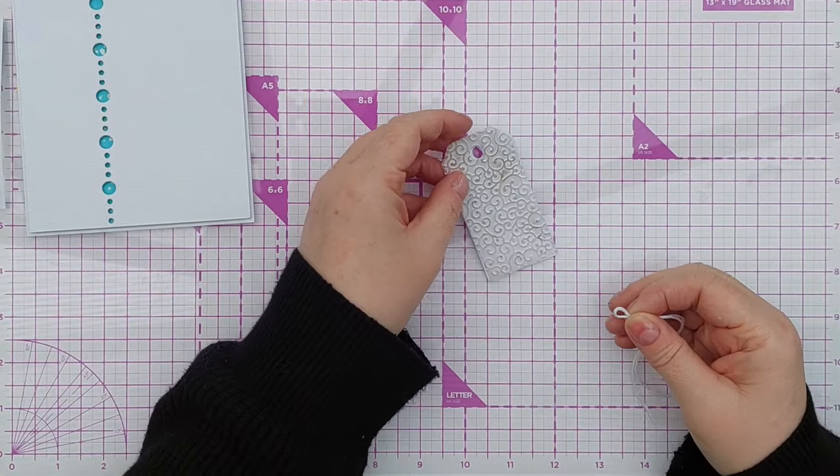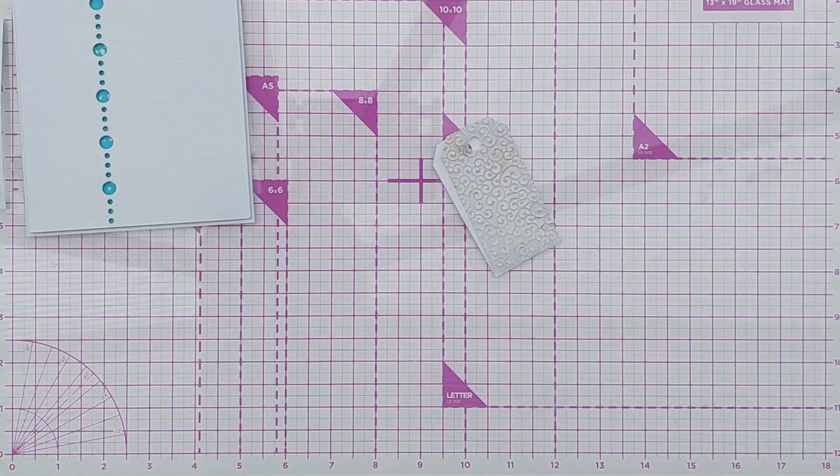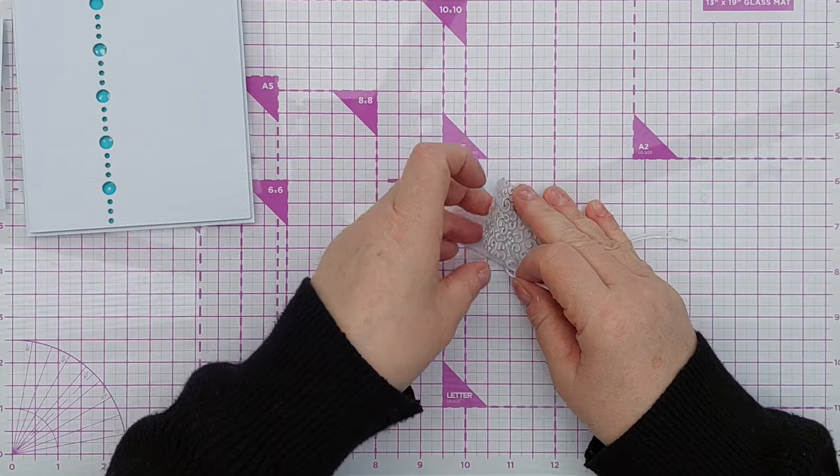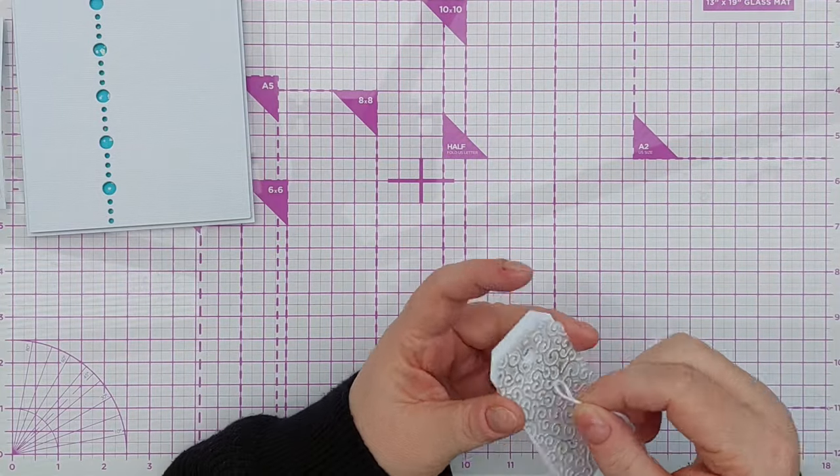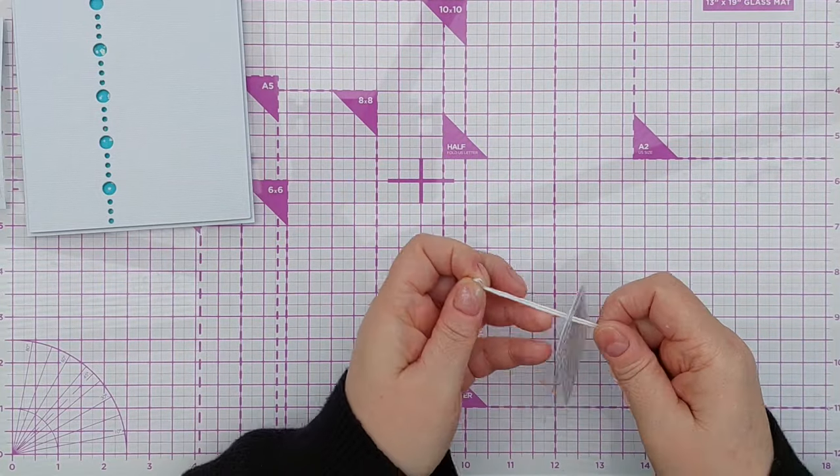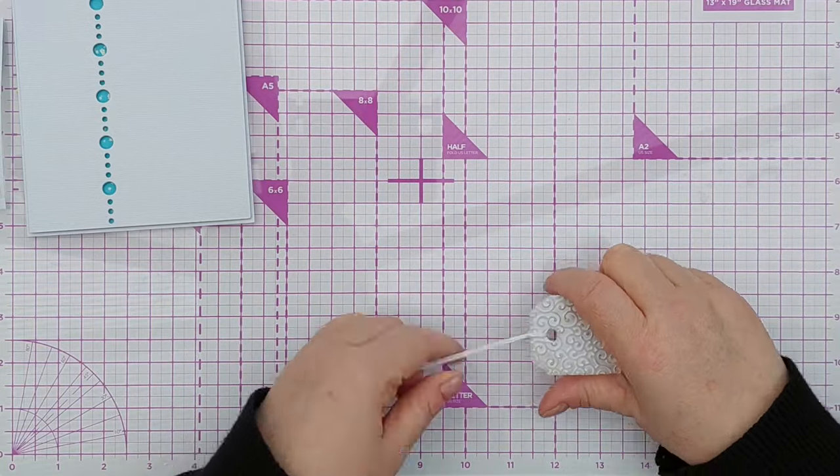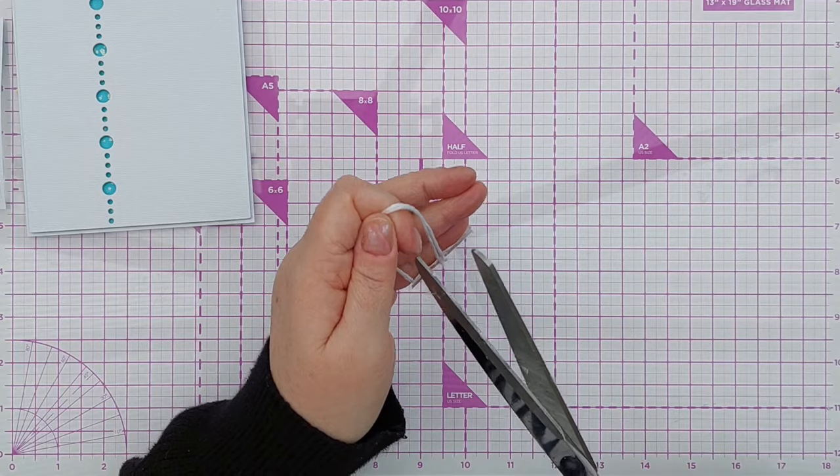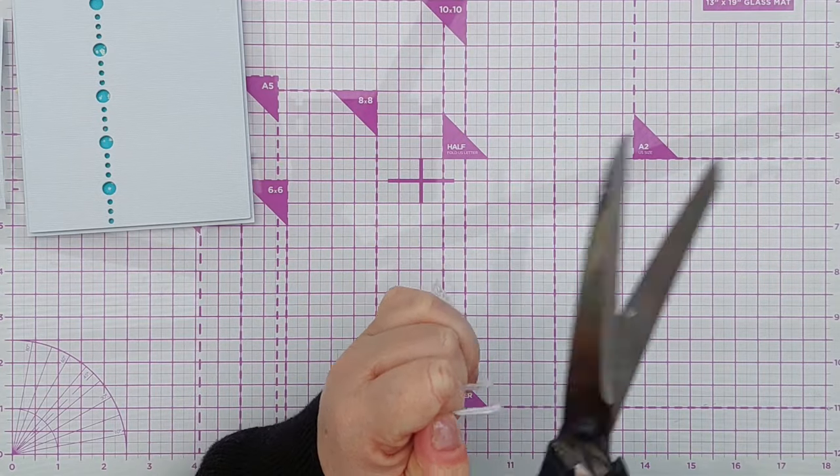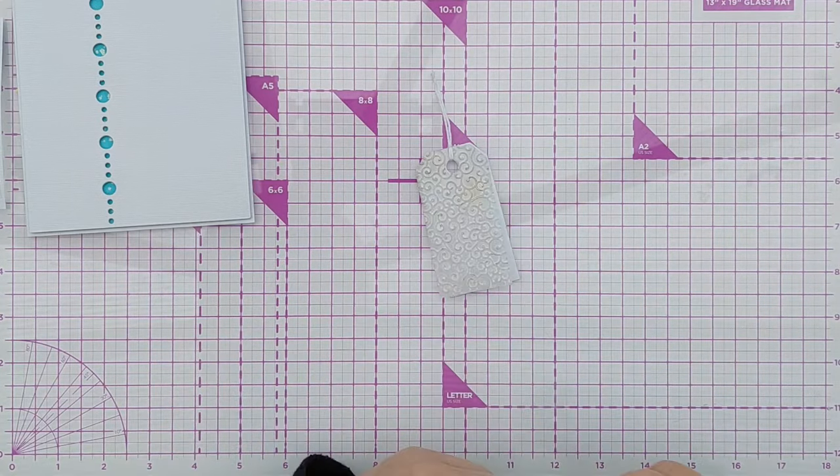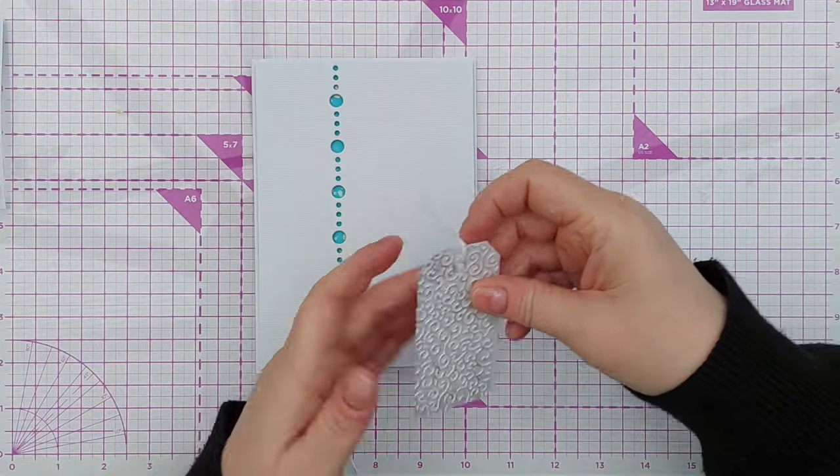After that I decided to attach the white and the vellum tag together using a bit of embroidery thread just white embroidery thread. But when I placed this on my card it covered up too many of the blue holes so eventually I ditch the white tag and just add the vellum tag.